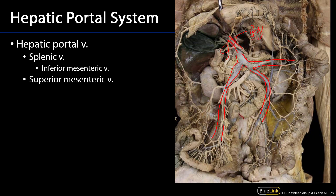That portal triad is heading up toward the porta hepatis — that fissure on the visceral surface of the liver that receives these vascular elements. And the portal vein is delivering this blood up to the sinusoids of the liver and the capillary beds there.